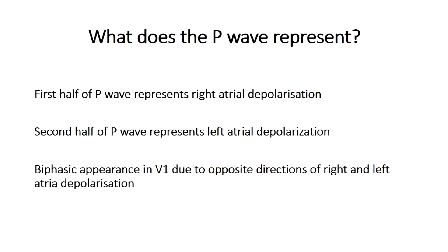This gives P waves a number of characteristics you need to know about. For example, in chest lead V1, the P wave may have a biphasic appearance — the first half has an upward deflection, whereas the second half representing left atrial depolarization has a downward deflection before returning to baseline. This is because the electrode sees the two currents moving in opposite directions, registering right atrial depolarization as upward and left atrial depolarization as a downward deflection.